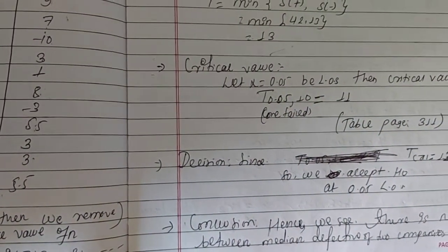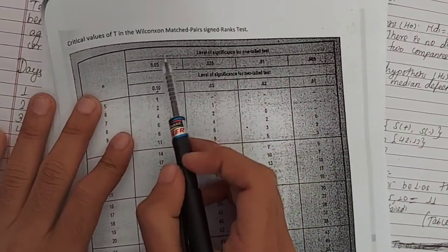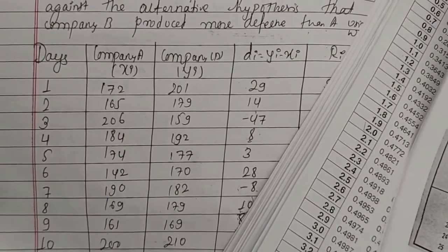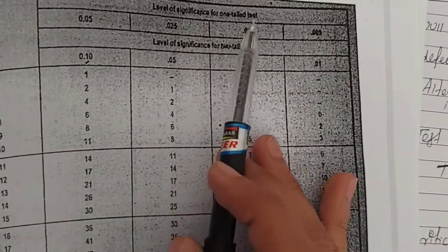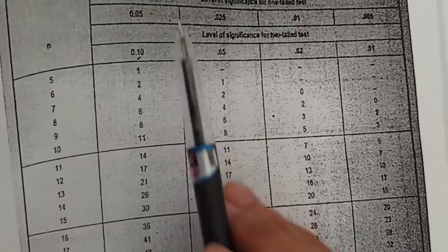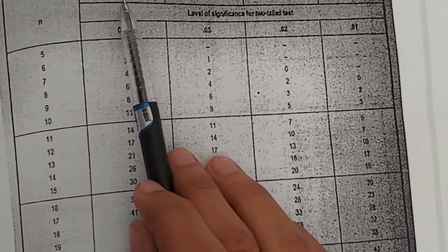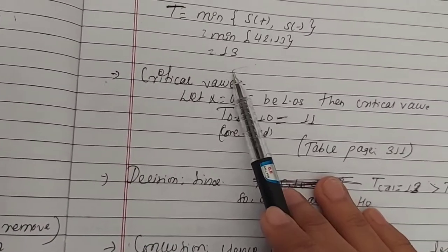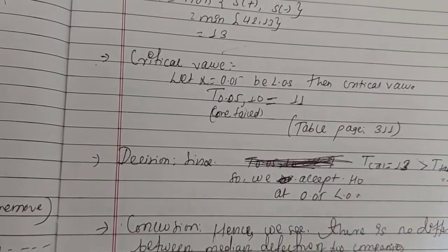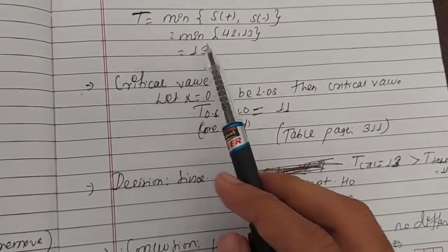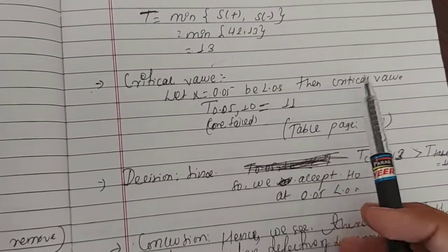We now look up the Wilcoxon matched pairs signed rank test table. We condition on a one-tailed test at significance level 0.05 with sample size n equals 10. From the table, the critical value at 5% level of significance for a one-tailed test with n equals 10 is 11.